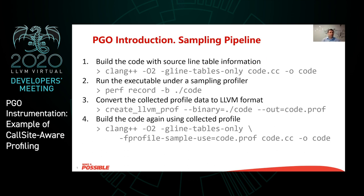In order to map information from program execution to source code, we also need to enable debug information. In this case we enable line tables only, which is enough to map from program counters to lines in the code. This information will be used later to attach information about program execution to the source code IR — the intermediate representation of the program — and to improve decisions during optimization. There is a potential drawback that this information is not precise, especially if we use advanced optimizations such as O2 or O3 optimization levels, so sampling profiling may not allow us to collect very precise information.